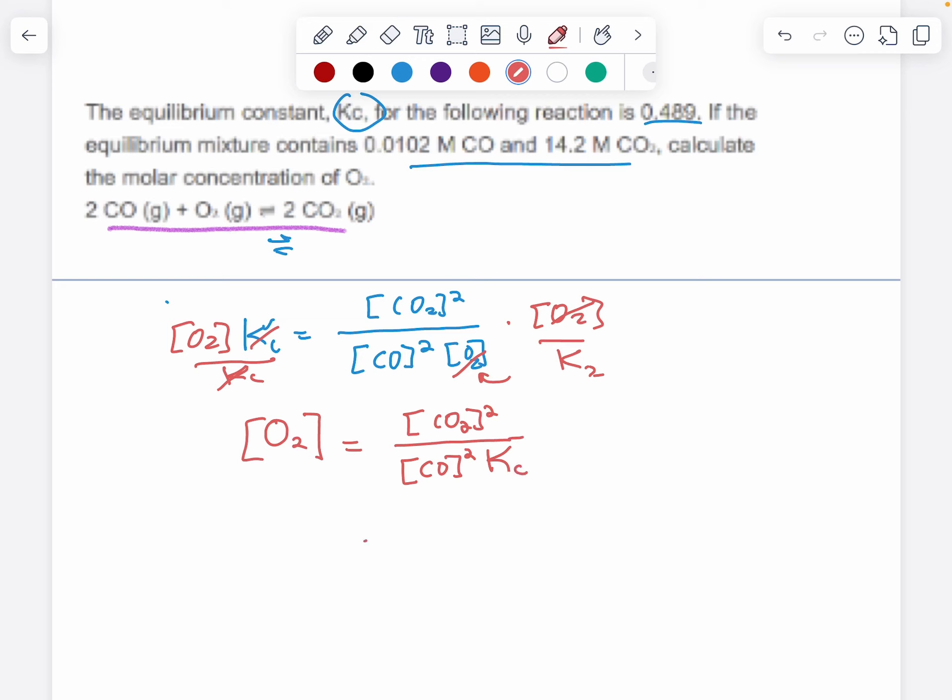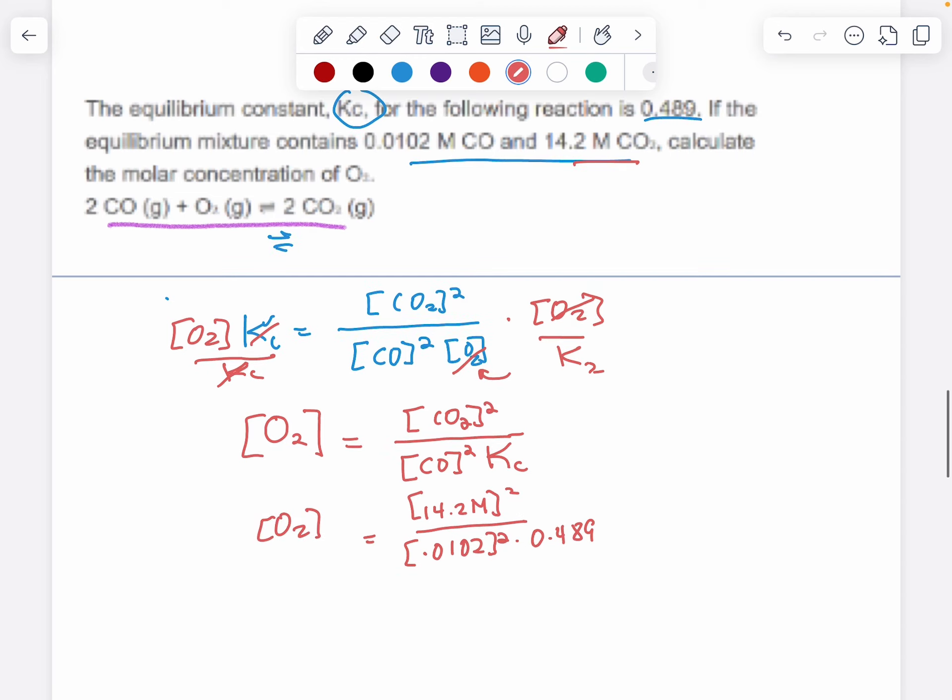The concentration of CO2 squared divided by the concentration of carbon monoxide squared times the equilibrium constant, both of them in the denominator. At this point I can just put in my numbers and solve for the concentration of oxygen. So the concentration of CO2 is 14.2 molar, divided by the concentration of carbon monoxide 0.0102 squared divided by 0.489.